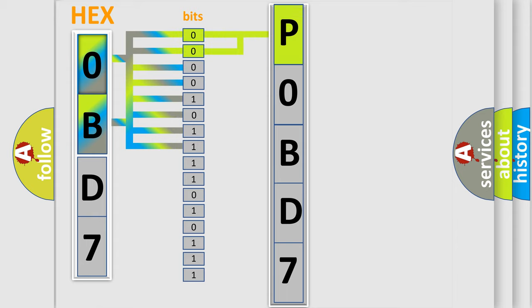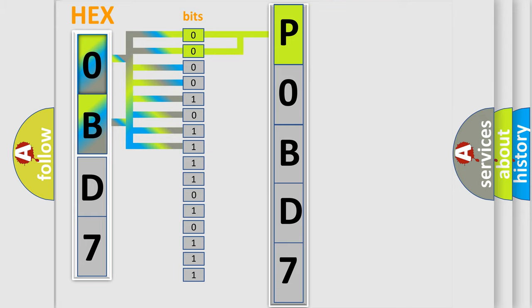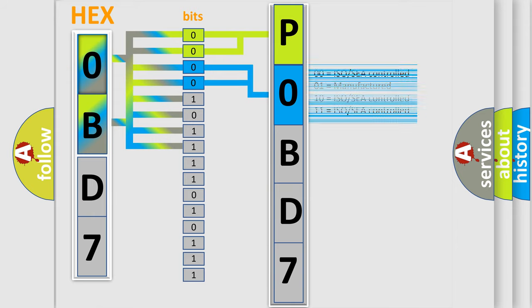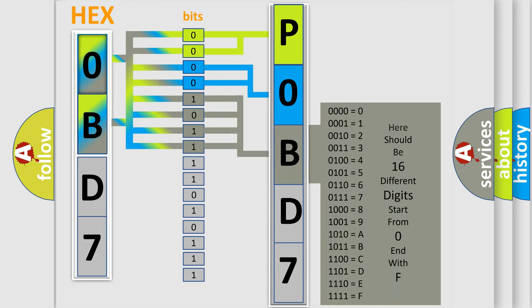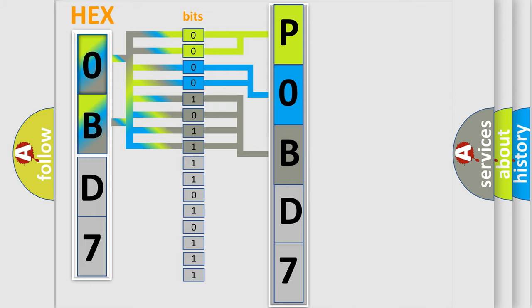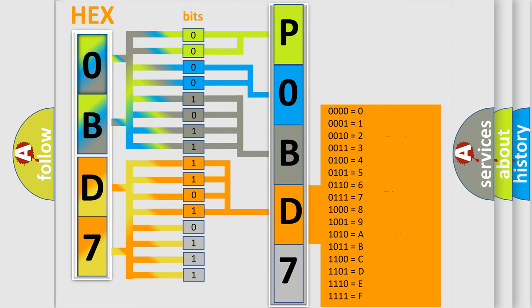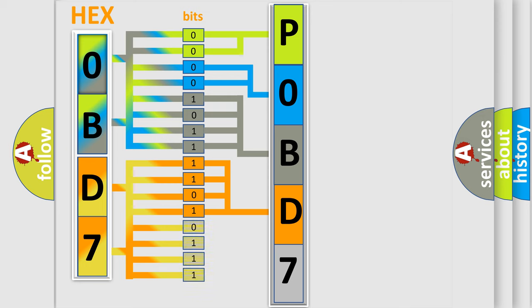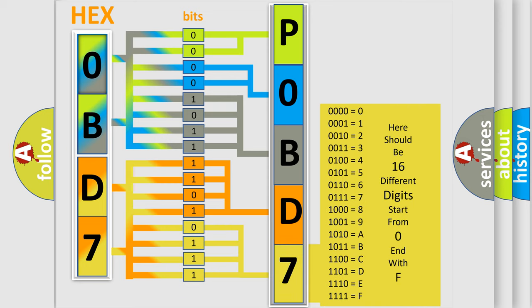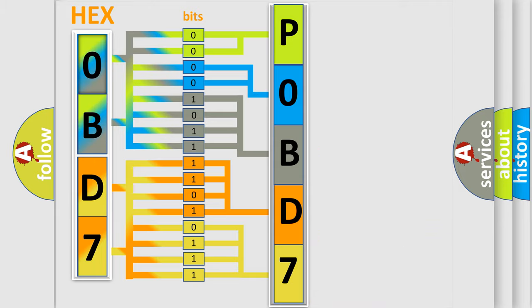By combining the first two bits, the basic character of the error code is expressed. The next two bits determine the second character. The last four bits of the first byte define the third character of the code. The second byte is composed of a combination of eight bits. The first four bits determine the fourth character, and the combination of the last four bits defines the fifth character. A single byte conceals 256 possible combinations.